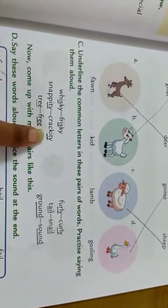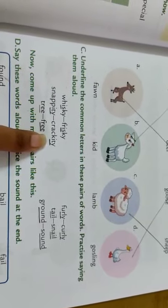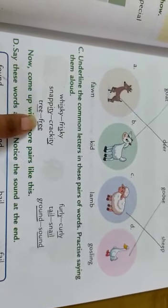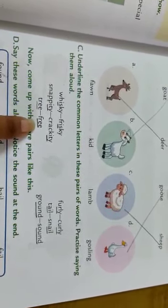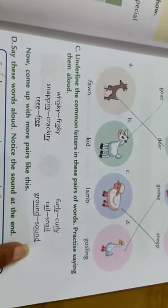Snapty, crackty. ITY, ITY is the common letters. Tree, free. REE, REE is what? Common letters. Ground, sound. Same here.